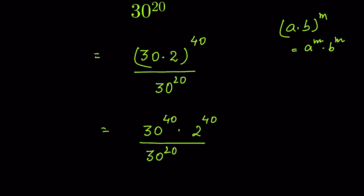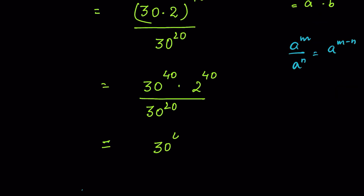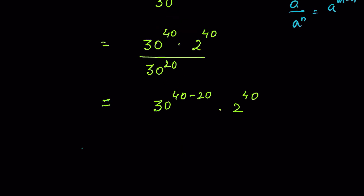Now using the identity A^M upon A^N equals A^(M−N), we get 30 to the power 40 minus 20, times 2 to the power 40. Since 40 minus 20 is 20, this simplifies to 30 to the power 20 times 2 to the power 40.